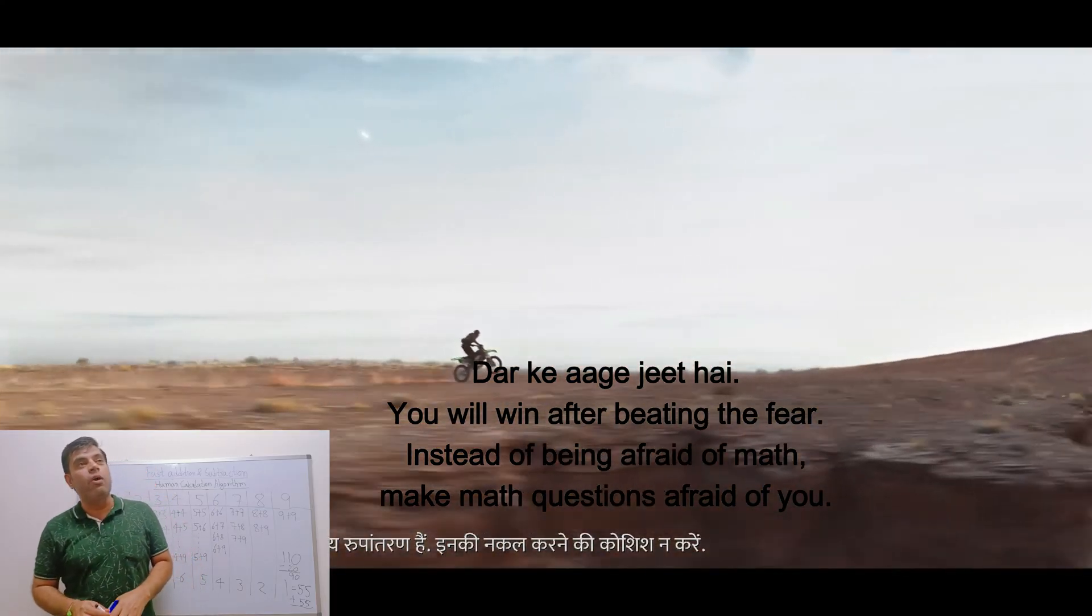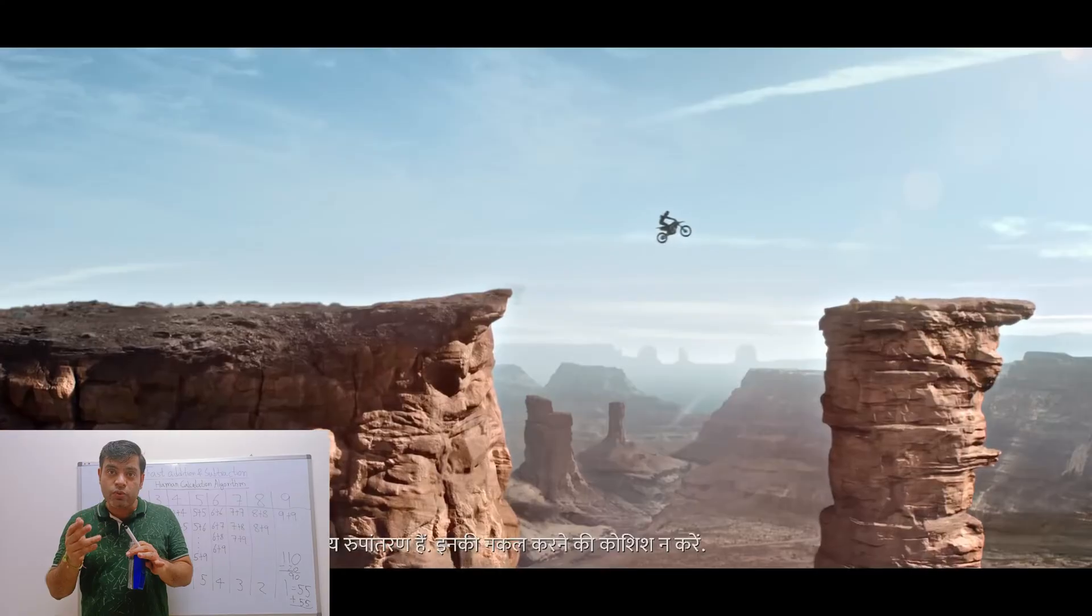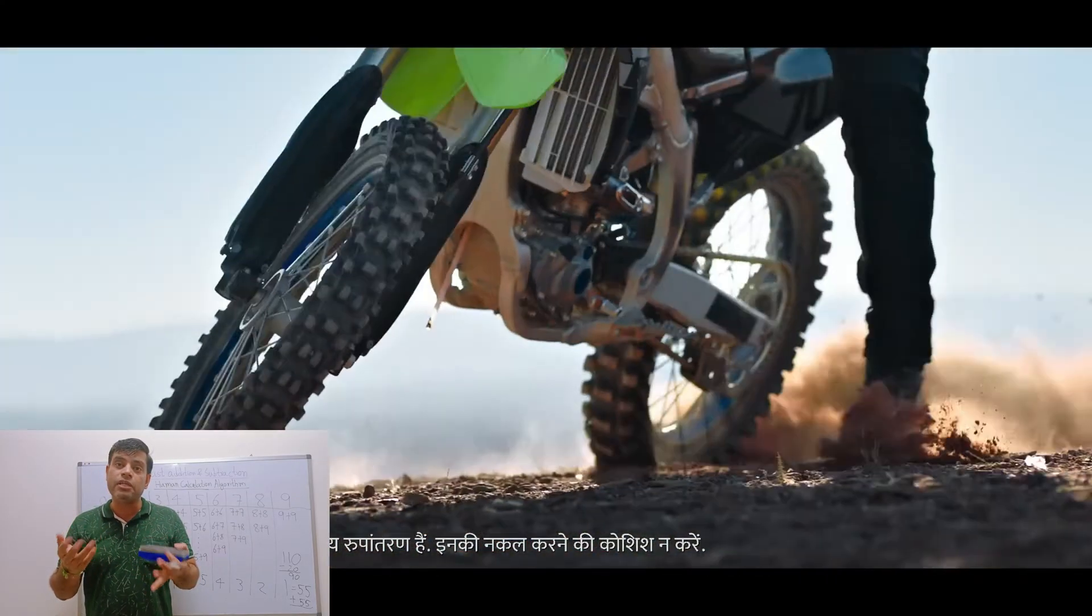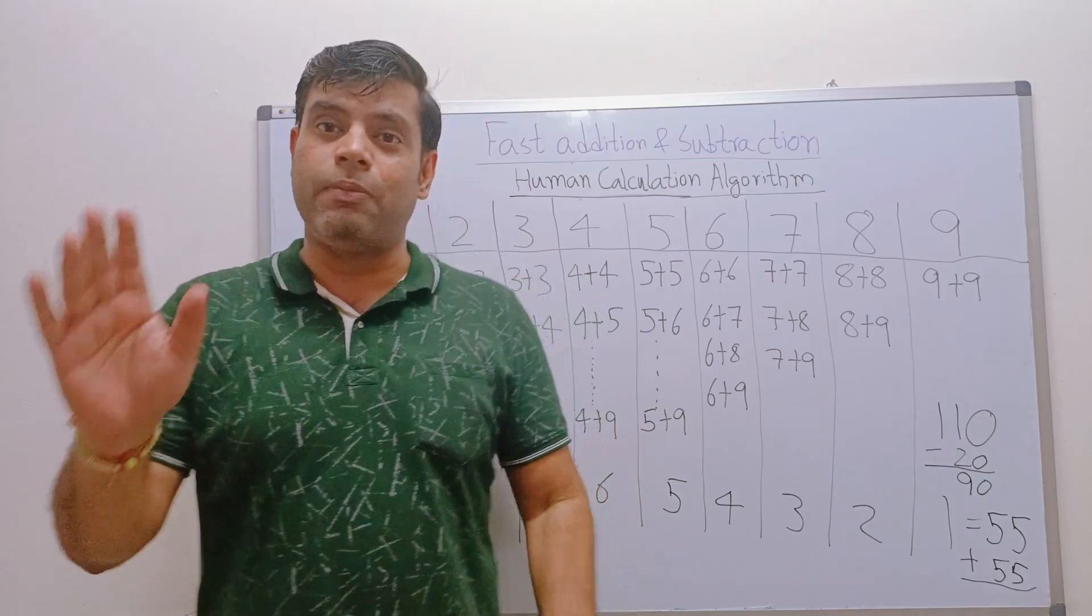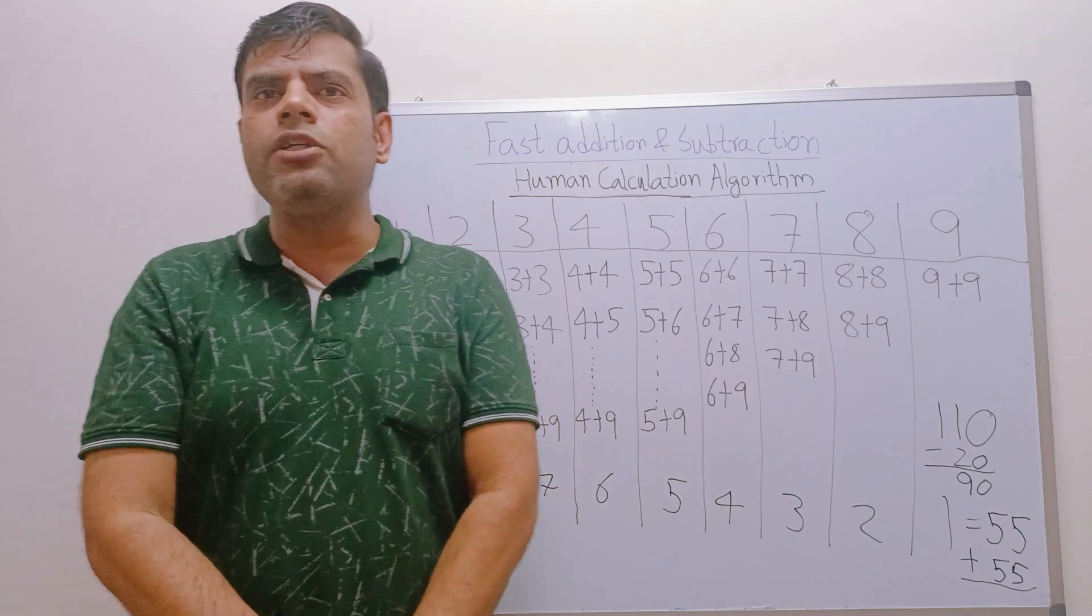So start doing these exercises. Let's do one more for you. Let's take now bigger number 8: 8 plus 1 is 9, 8 plus 2 is 10, 8 plus 3 is 11, 8 plus 4 is 12, 8 plus 5 is 13, 8 plus 6 is 14, 8 plus 7 is 15, 8 plus 8 is 16, 8 plus 9 is 17.